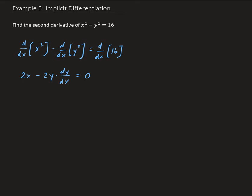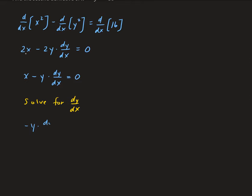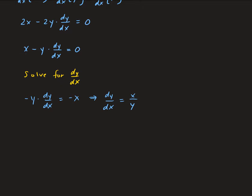We can divide everything by two to simplify, giving us x minus y times dy/dx equals zero. Solving for dy/dx: negative y times dy/dx equals negative x, which is the same as dy/dx equals x over y — just canceling out the negative signs. That is the first derivative.